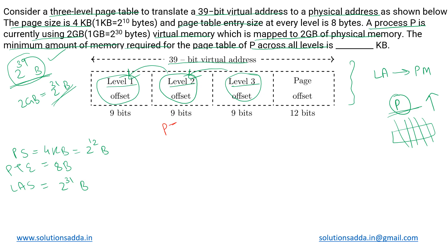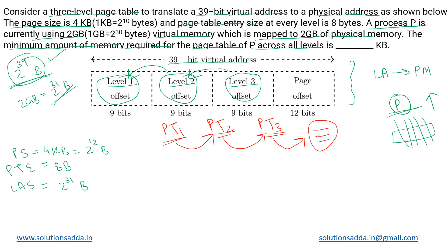Let us call these PT1, PT2, and PT3. The entries of the level 1 page table map to the corresponding level 2 page tables. Similarly, entries of level 2 page tables map to the corresponding level 3 page tables, and entries of level 3 page tables give us the actual frame number where our data will be located. The distribution of bits is given as 9, 9, 9, and 12 — the 12 bits correspond to the offset, and the three 9-bit fields correspond to indices at each respective level.